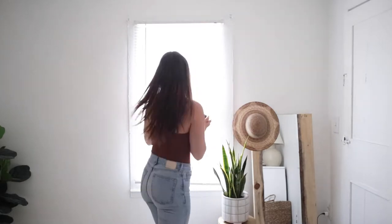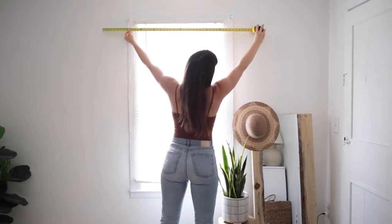Today we're going to be sharing how to make this simple and affordable curtain rod. First you're going to measure your windows. I added about 5 inches on each side to give extra room for the curtains.